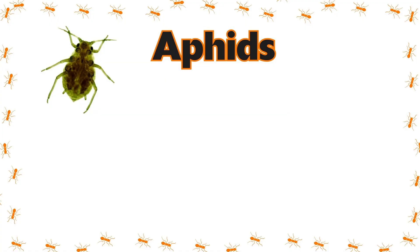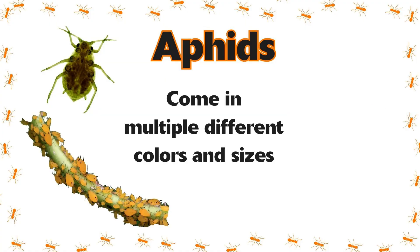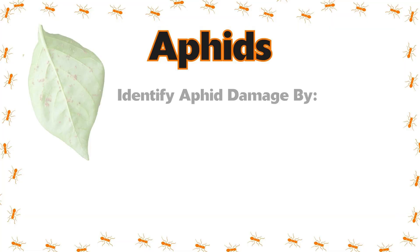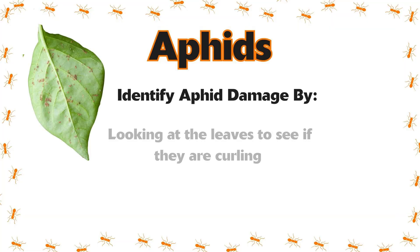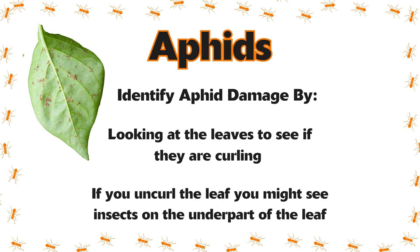The last on the list that we'll be talking about are aphids. Aphids come in multiple different colors and sizes. The way to identify aphid damage on trees and shrubs is by looking at the leaves and seeing if they're curling. A lot of the time, if you uncurl the leaf, you might see insects on the underneath part of the leaves.